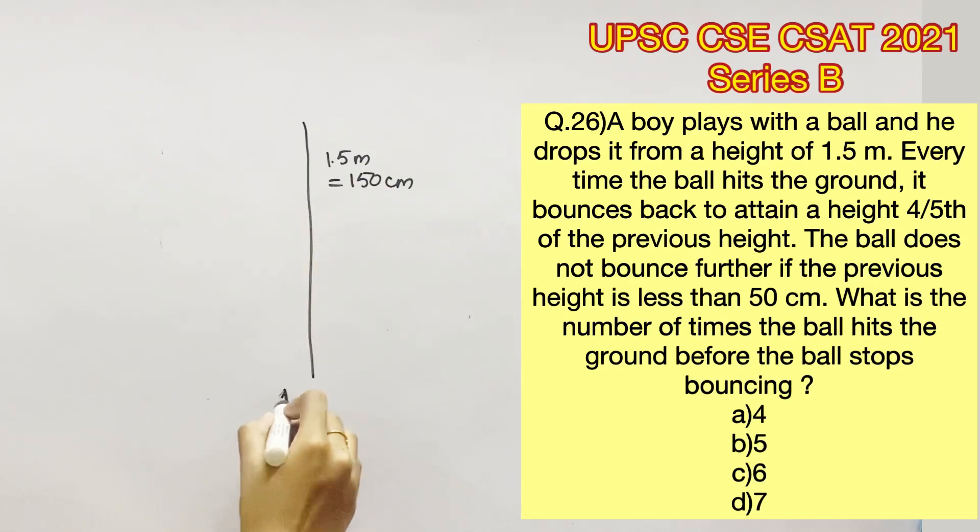Now let's say this is the first time it hits the ground. Now it bounces back to attain a height 4/5 of the previous height. So we have to find out what is 4/5 of 150 centimeters, which will be 4/5 into 150, that is 120 centimeters.